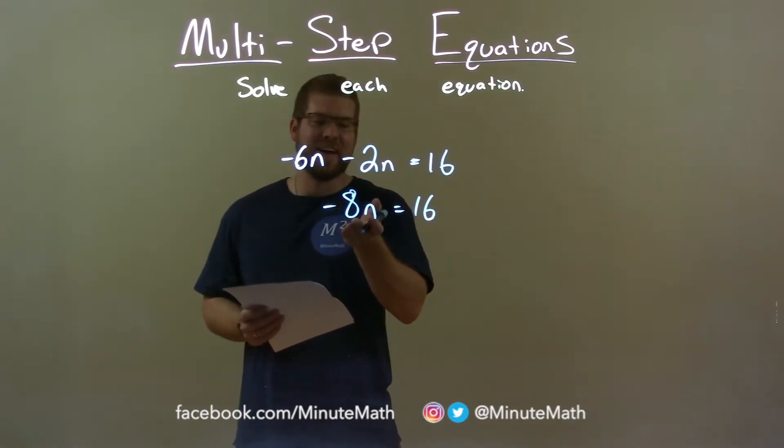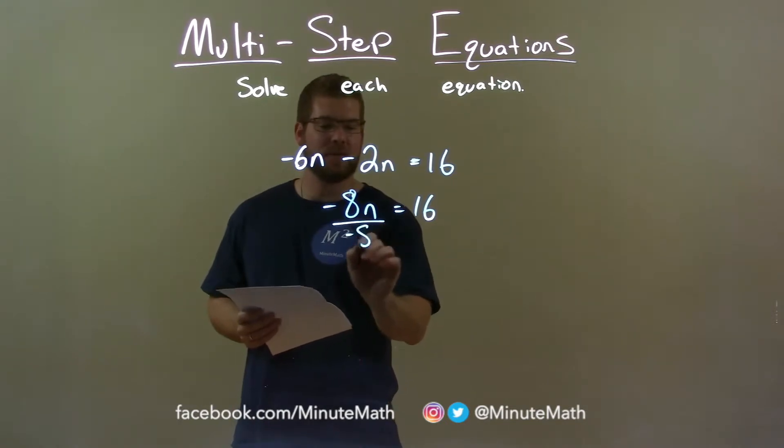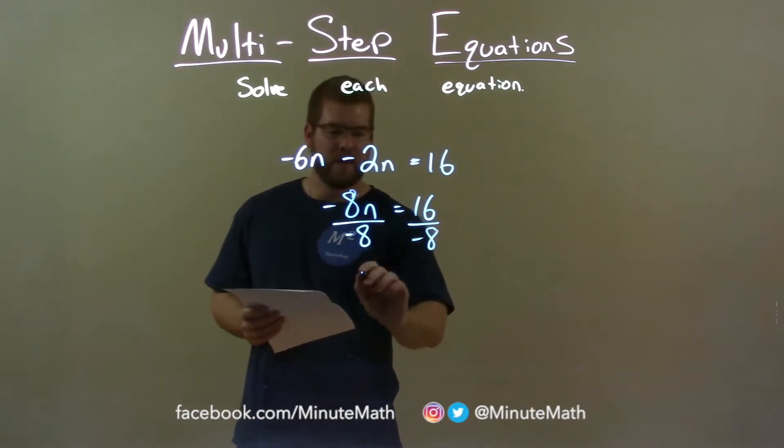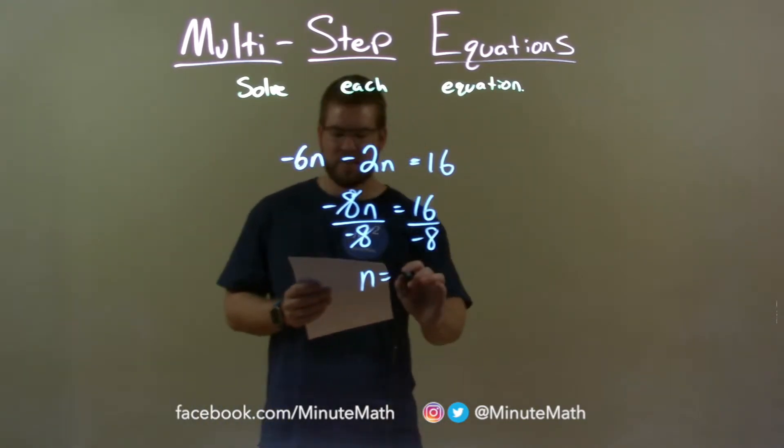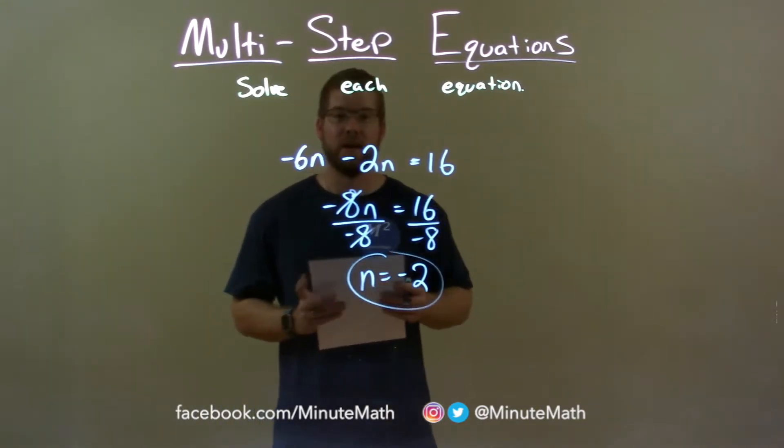We have multiplication between negative 8 and n, so if we do the opposite, division, we'll get n by itself. The 8's will cancel. 16 divided by negative 8 is negative 2 and there we have our final answer.